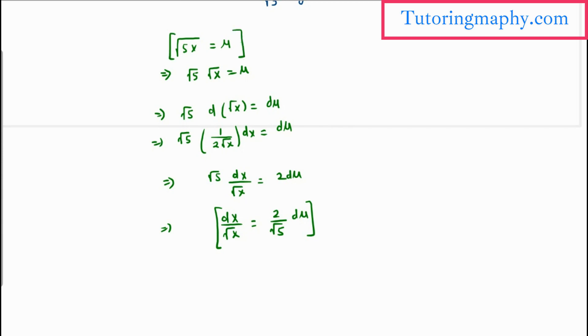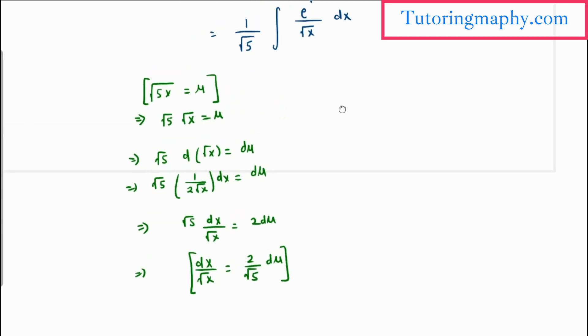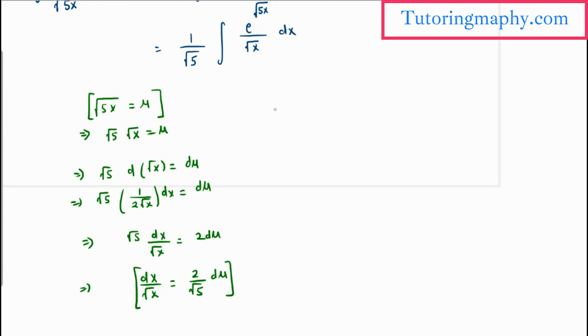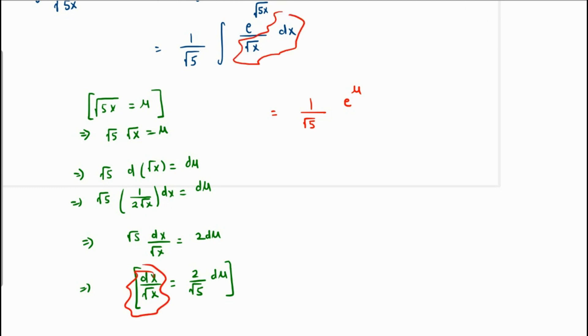These two equations are what we're going to use. This will equal 1 over root 5, e raised to... now root 5x is no longer root 5x, that is u, so we replace that with u.